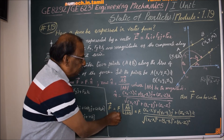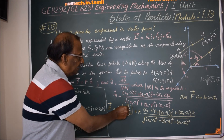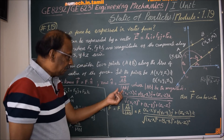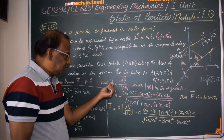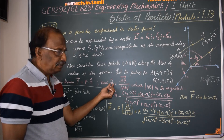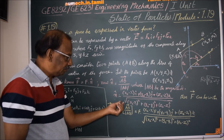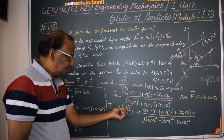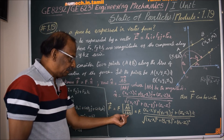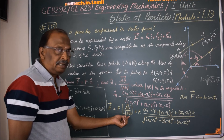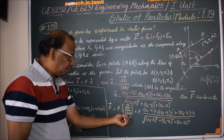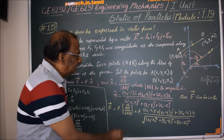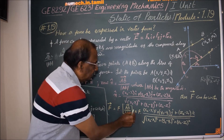F is equal to F into the unit vector, where the unit vector is AB divided by modulus of AB. This is how we determine the direction of the force using the two-point method.